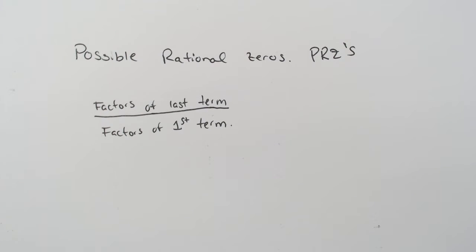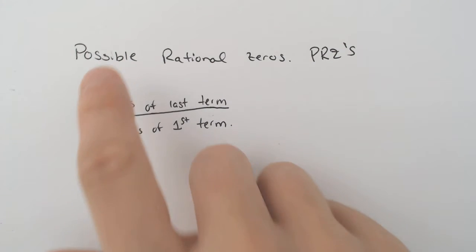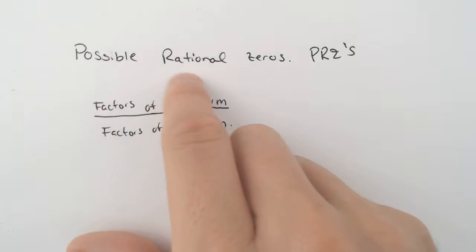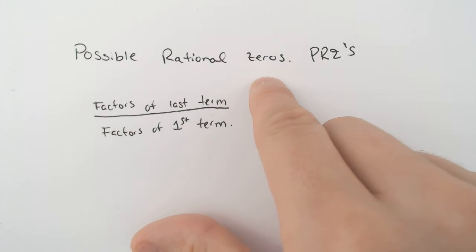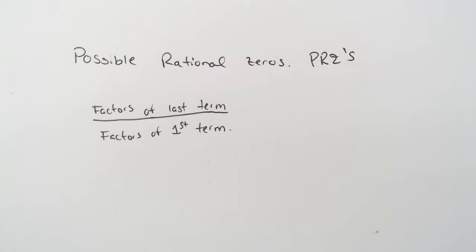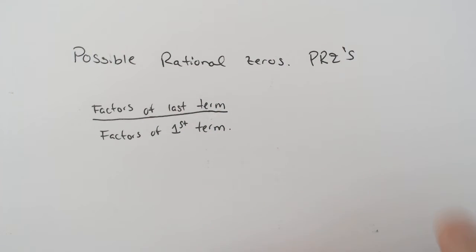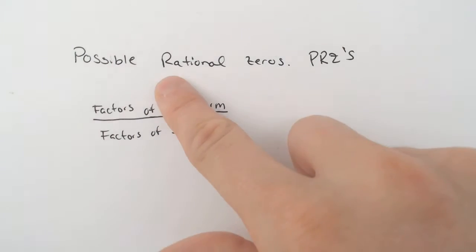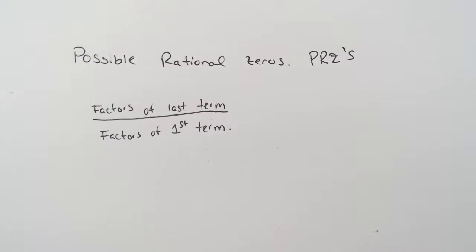Hello and welcome back to another episode of Math with Sohn. Today we're going to be looking at the possible rational zeros of a polynomial, better known as the PRZs, because possible rational zeros just takes way too much time to write down.